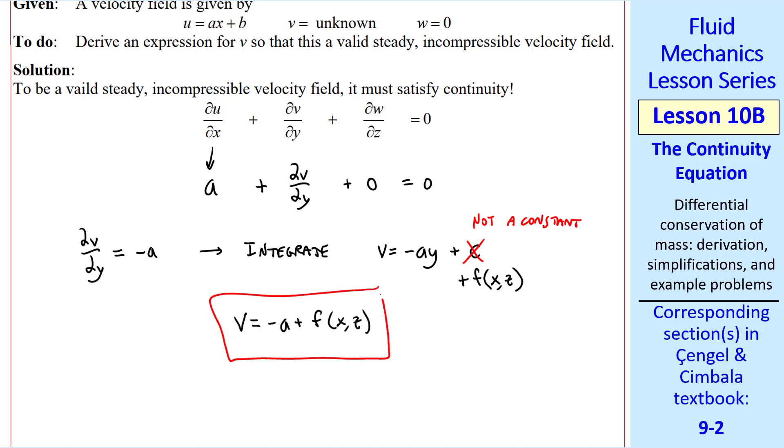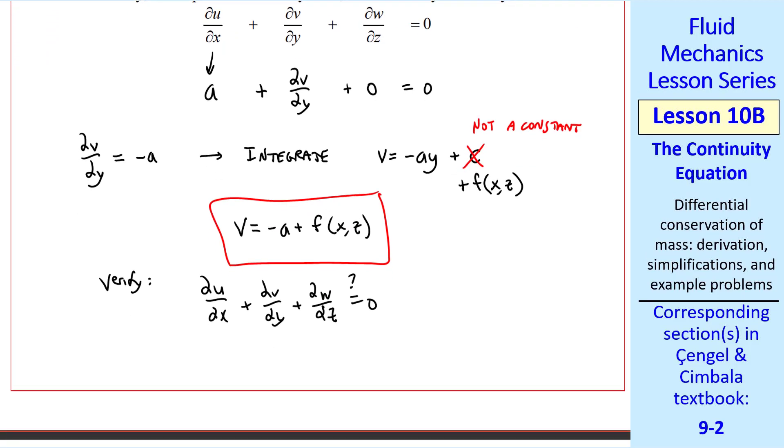So our answer is that v equal negative a y plus a function of x and z. Where this function can be anything, because v appears only as a derivative with respect to y. We can verify, is continuity satisfied? Well, again, del u del x is a, del v del y is negative a, and this function contributes nothing since it's not a function of y. And w was 0, so yes, it does satisfy our continuity equation for any function f of x and z.